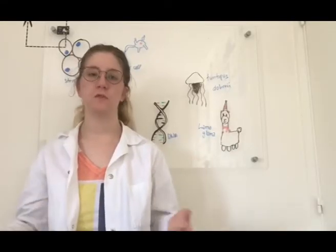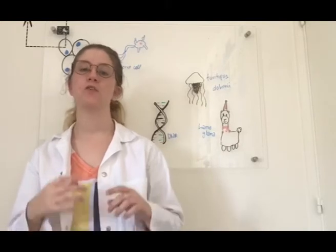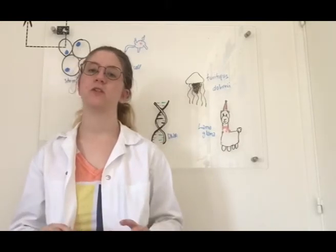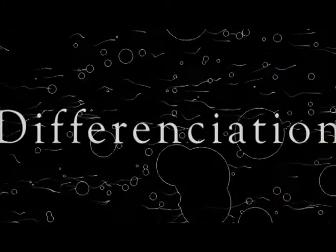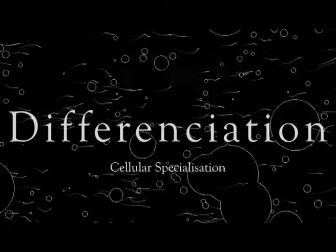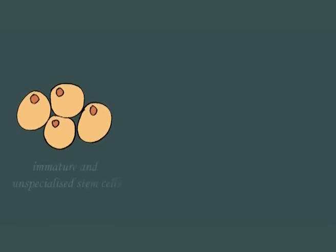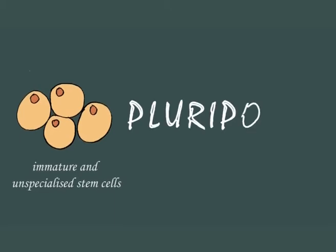To understand transdifferentiation, we must first see how normal differentiation works. The first few cellular divisions during the body's development provide every living organism with a set of immature and unspecialised stem cells called pluripotent.